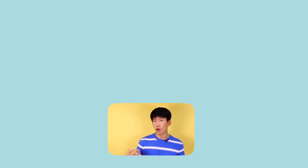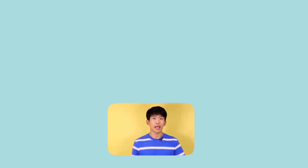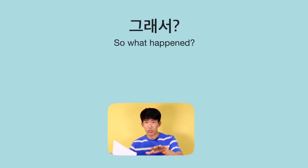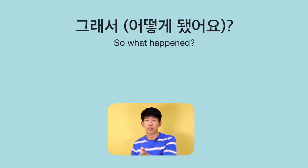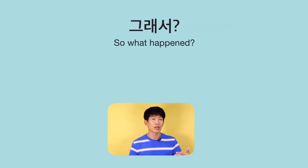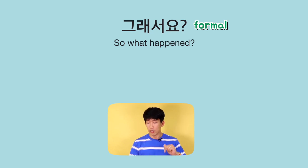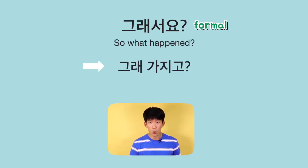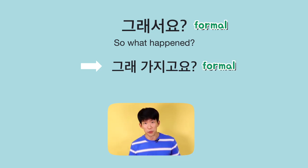When you're listening to a story and want to ask 'and then what happened?', you can say 그래서 — short for 그래서 어떻게 됐어요? or 그래서 그 사람이 뭐라고 했어요? In polite language, 그래서요. In the same meaning, in casual speech you can say 그래 가지고, and in polite language, 그래 가지고요. So you see that 가지고 can replace 서.